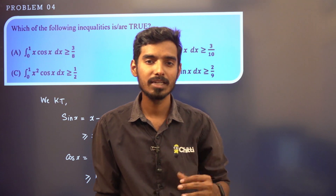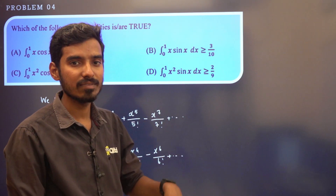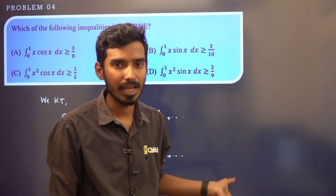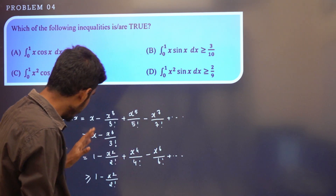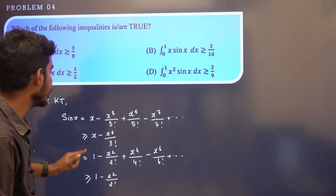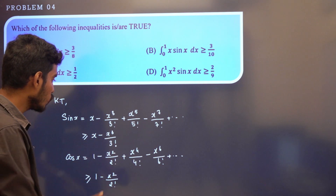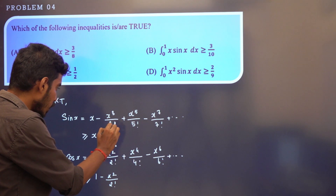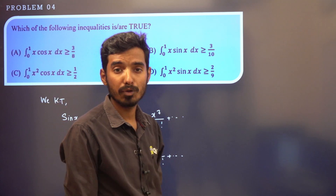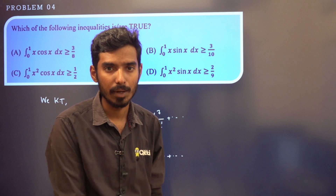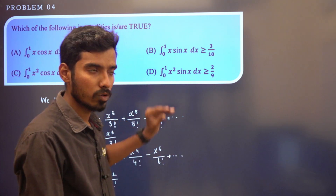The McLaurin series gives us sin x ≥ x − x³/3! and cos x ≥ 1 − x²/2!. We will make use of these conditions to solve the problem and check each option.